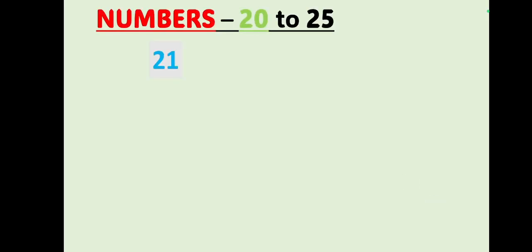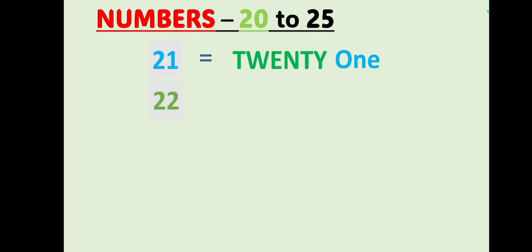Let's begin with the class. Number 21: T W E N T Y, 20, O N E, 1 — 21. Number 22: T W E N T Y, 20, T W O, 2 — 22.